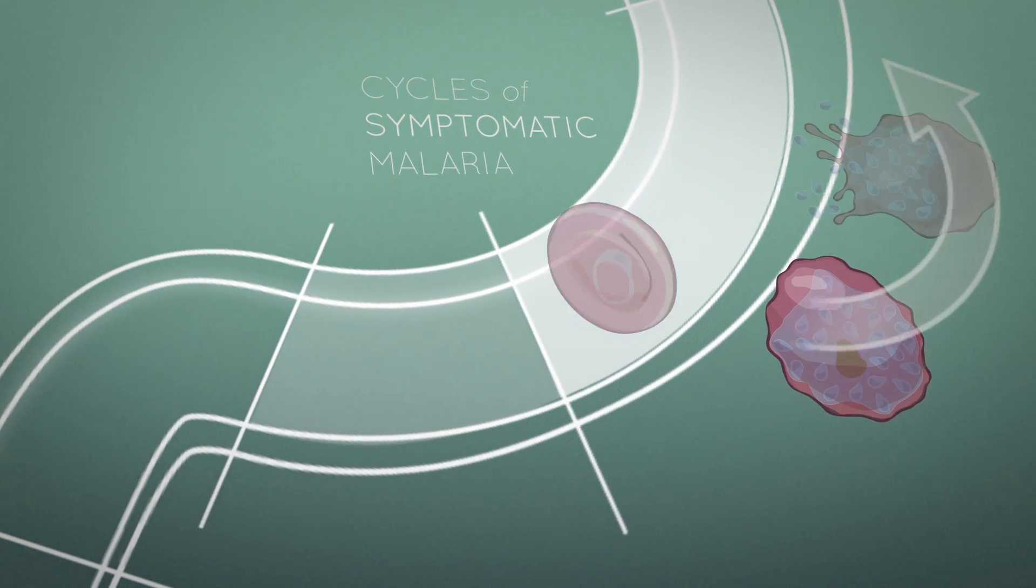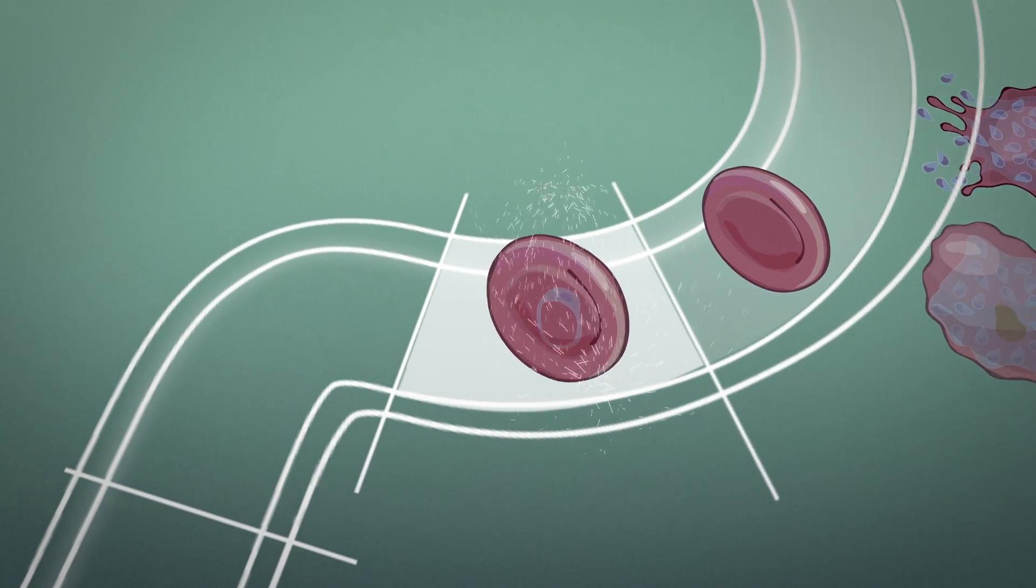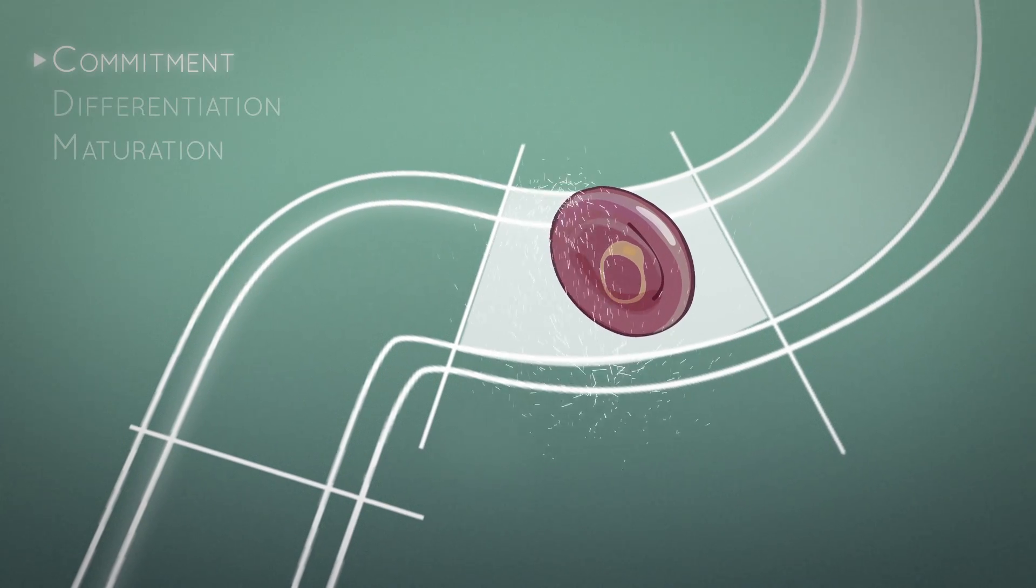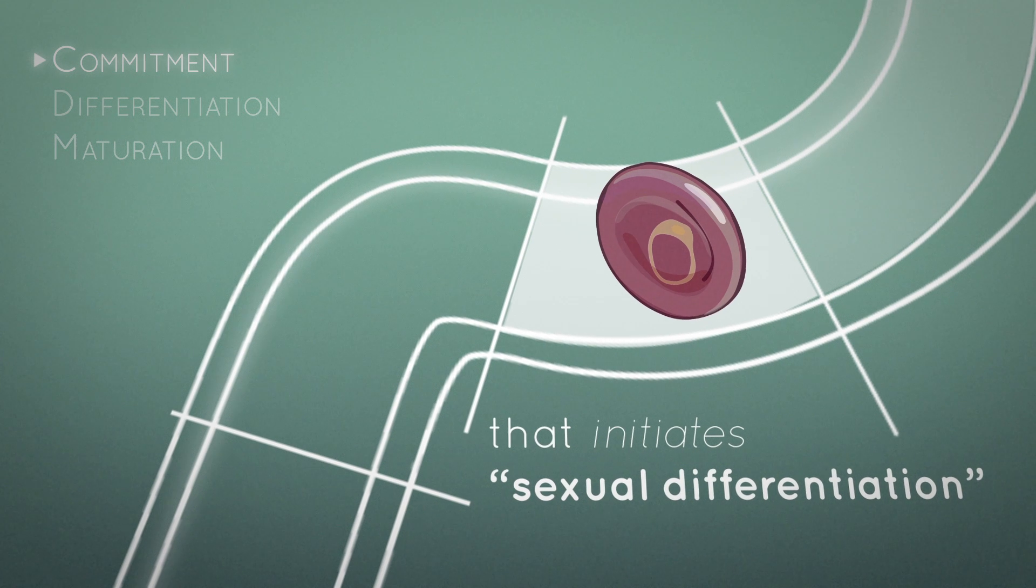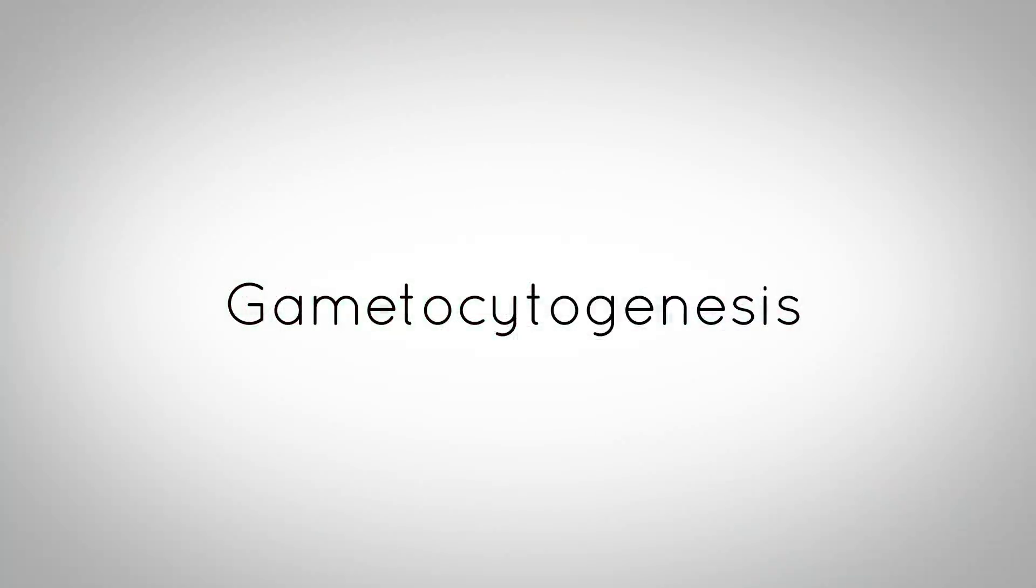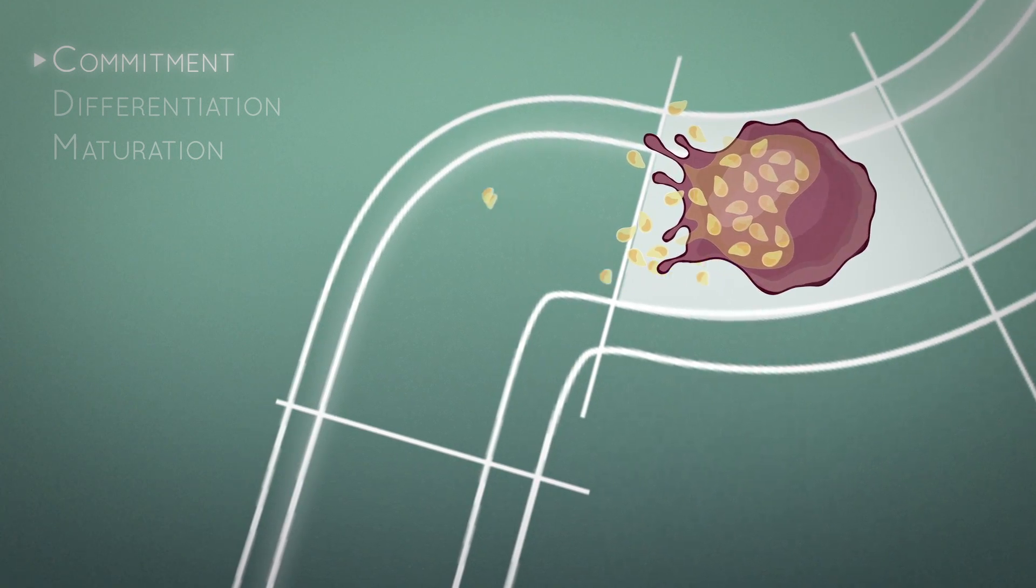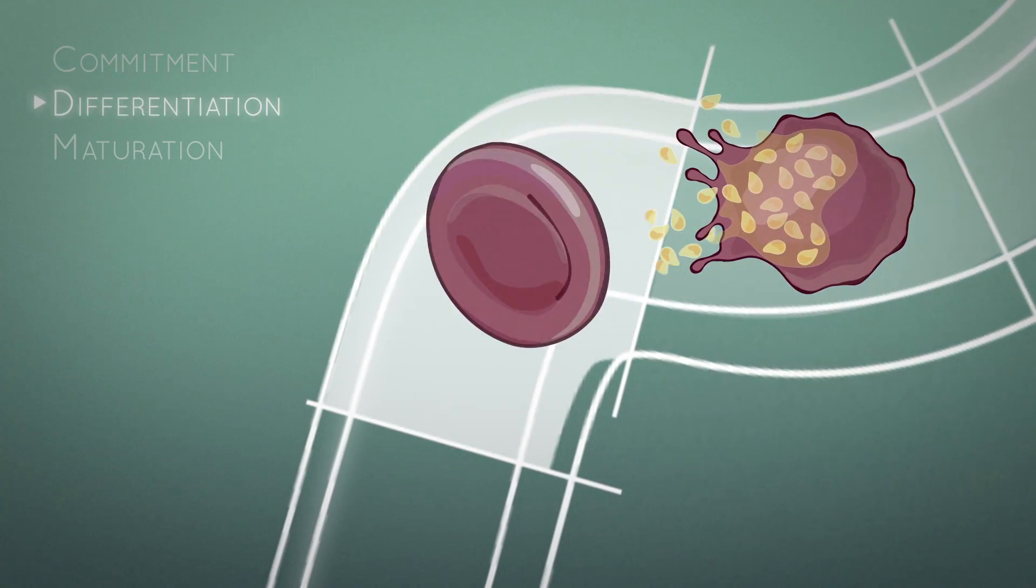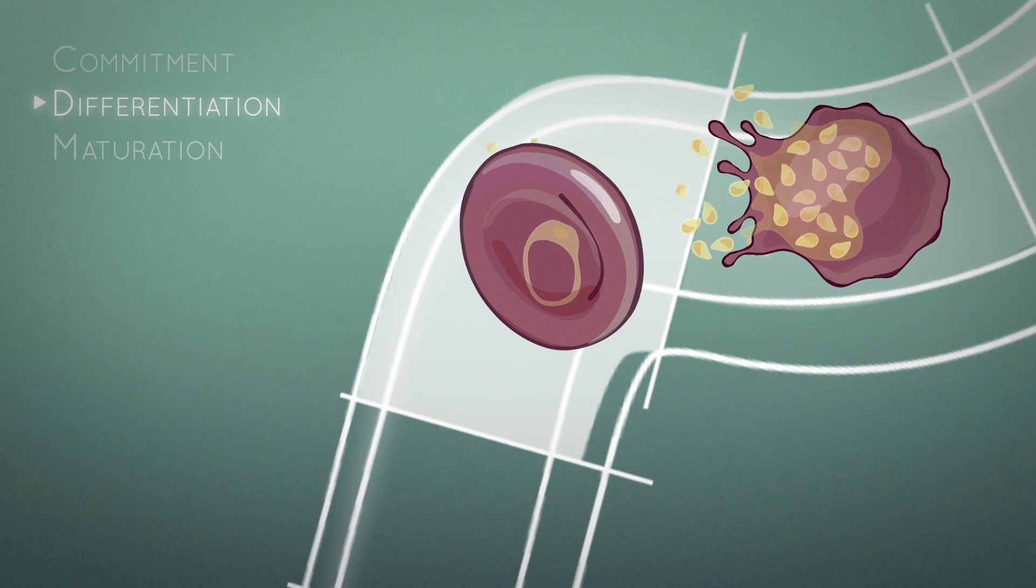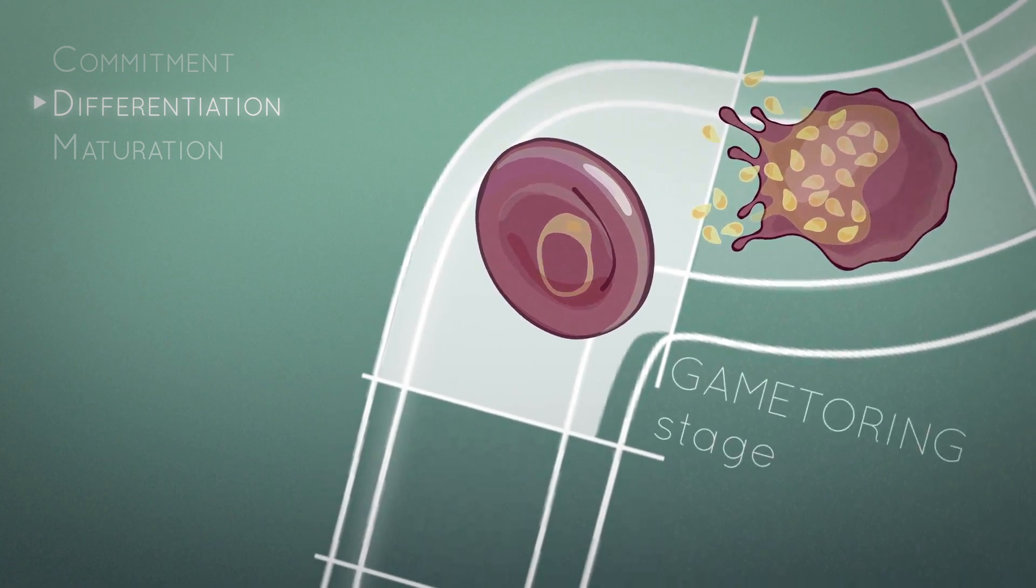A subset of these asexual parasites receives a commitment signal that initiates sexual differentiation, or gametocytogenesis. Merozoites are then released from sexually committed schizont infected RBCs, invade a new RBC, and form the gametoring stage.